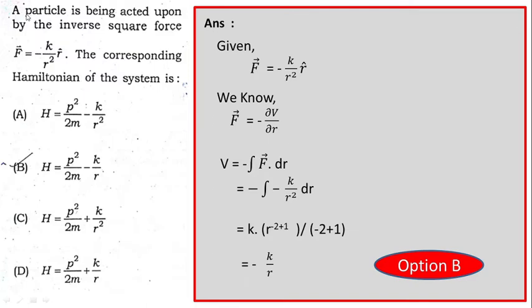The first question is a particle is being acted upon by an inverse square force which is given as F vector equal to minus k by r square r cap. The corresponding Hamiltonian of the system is... If you observe these four options carefully, the kinetic energy part, that is p square divided by twice m, is same for all of them, and the potential energy part is actually varying.